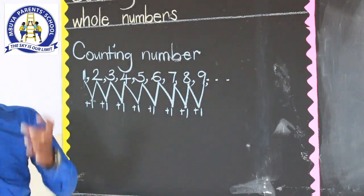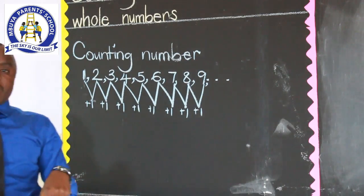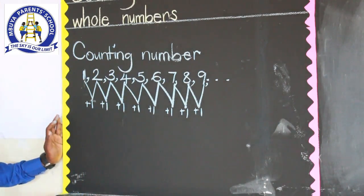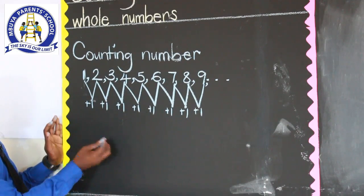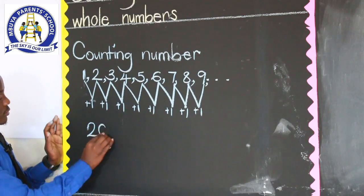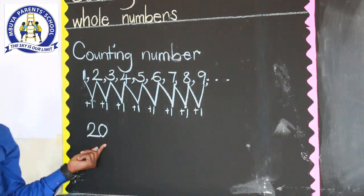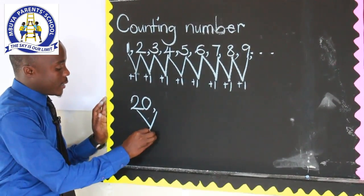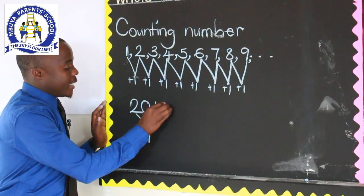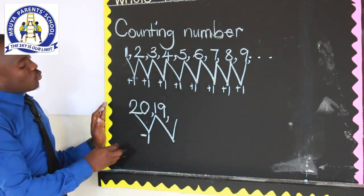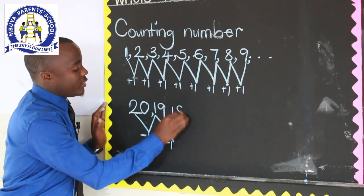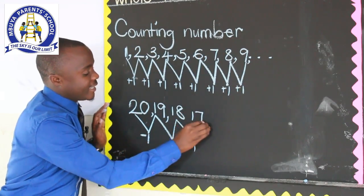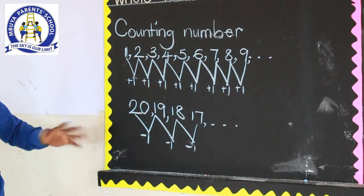But if we are counting in decreasing order, that is in descending order from the highest number to the lowest number, for example if our first counting number is 20, in decreasing order to get the next counting number we shall subtract one to get 19. To get the next one, subtract one to get 18, then 17, and so on. That is with counting numbers.